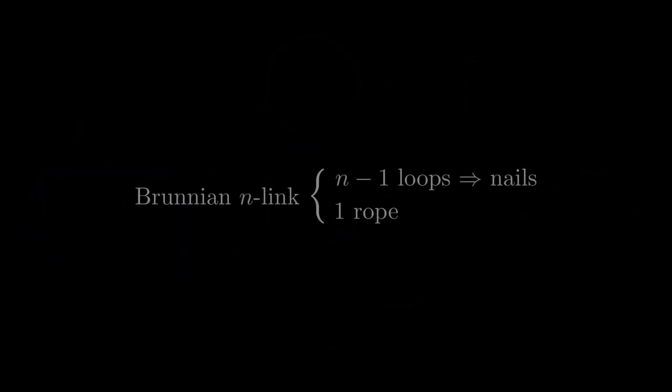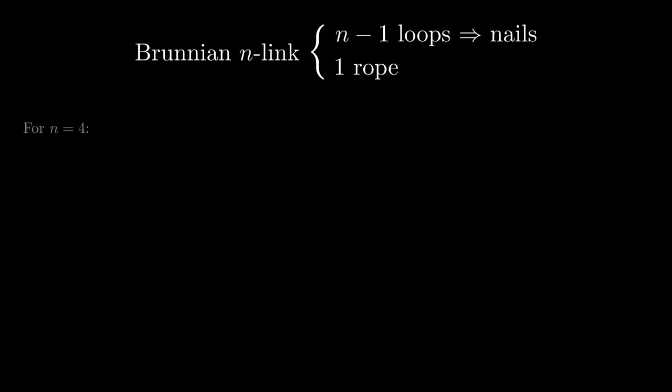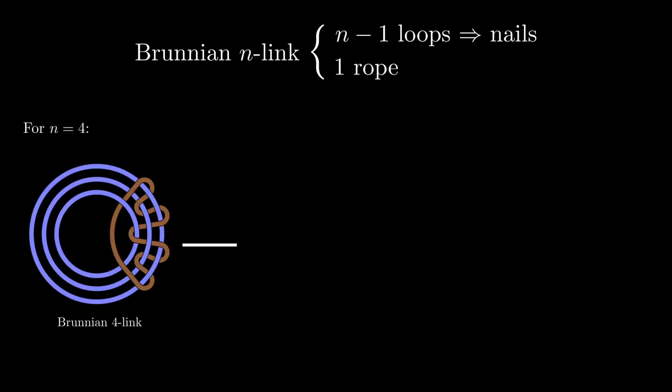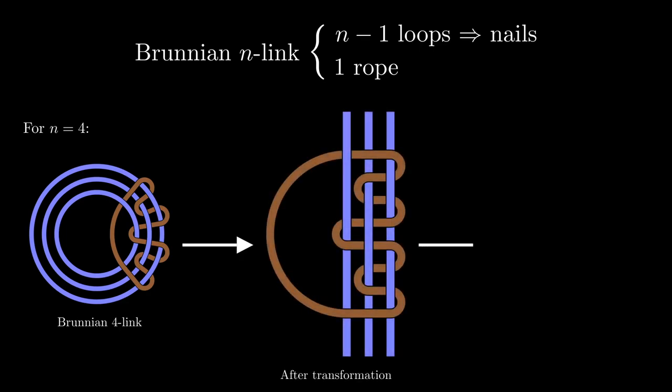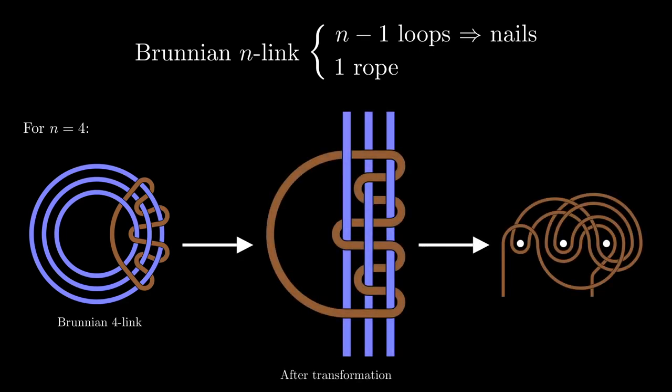Absolutely! Starting from a Brunian n-link, we can transform n-1 of the loops into nails and the remaining one will be the rope, looped around the nails. Let's see the answer for the three-nail puzzle. And here's the proof that the solution we obtained is correct.